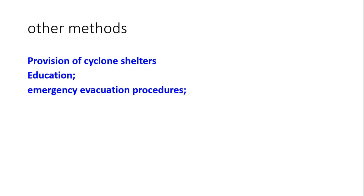For IGCSE exams, if they don't specify a particular method, and just ask you to describe how to manage a coast, you can add other methods such as provision of cyclone shelters, education, and emergency evacuation procedures. However, if they give you a specific method to describe, we've described them above. Thank you — we've come to the last part of this topic, and the next thing will be the case study aspect and possibly coursework.